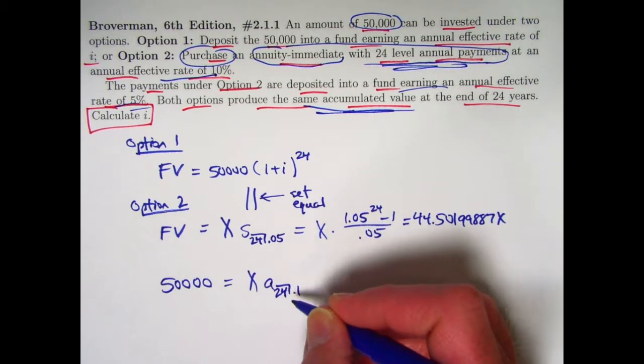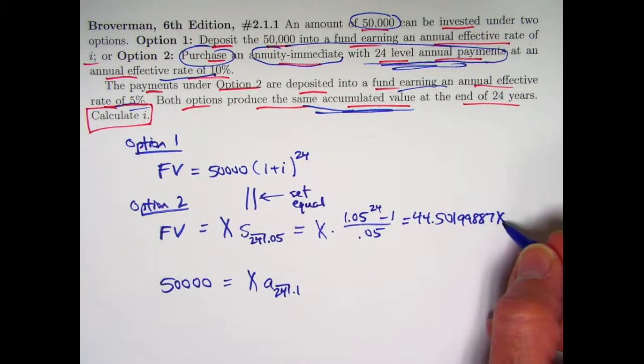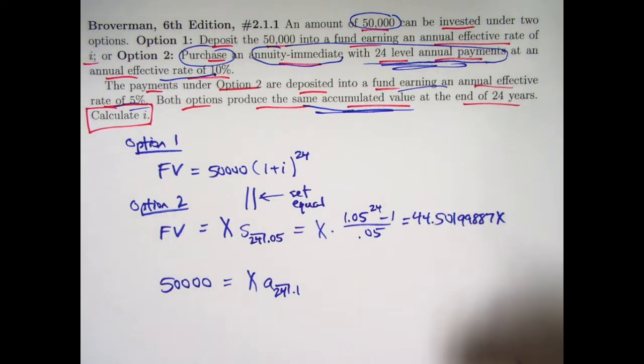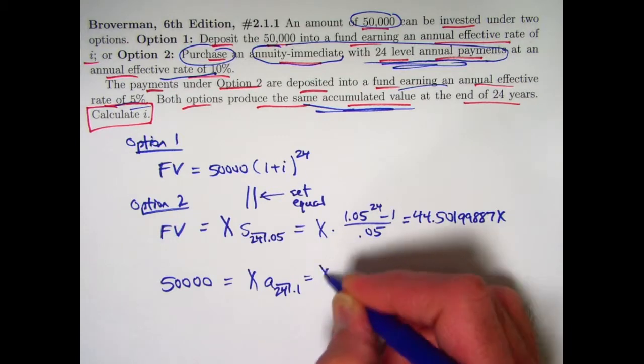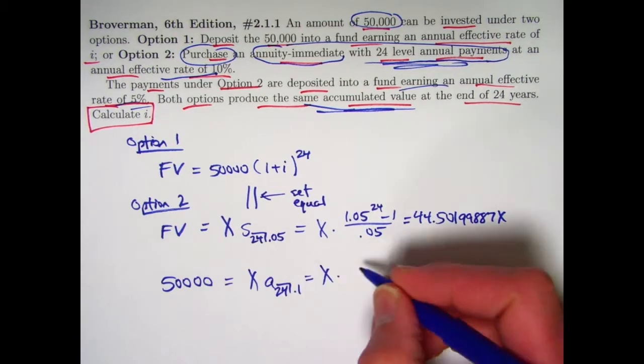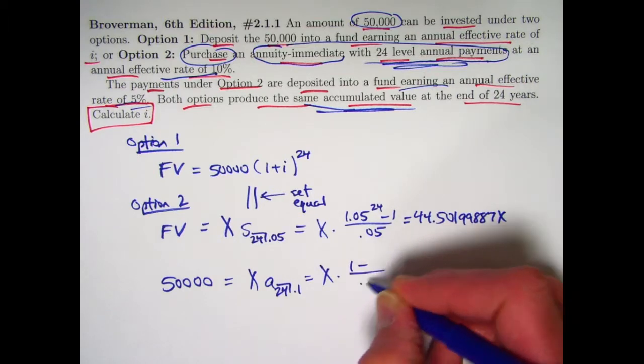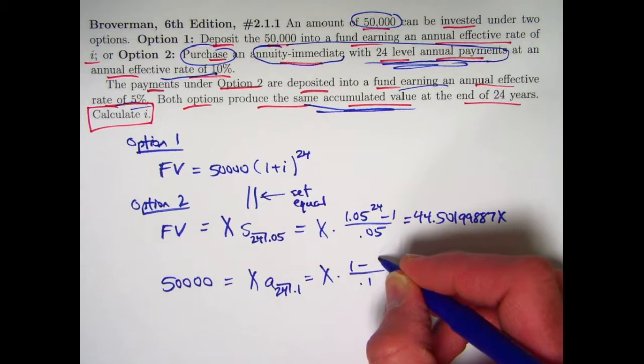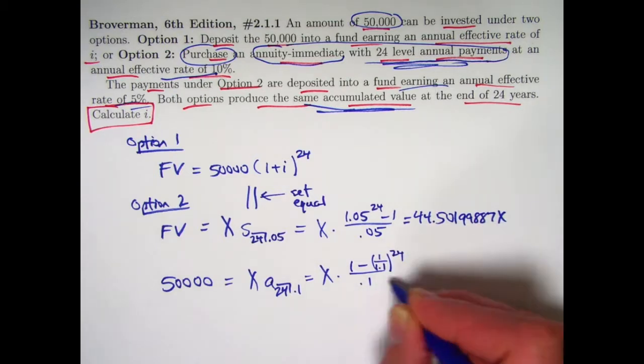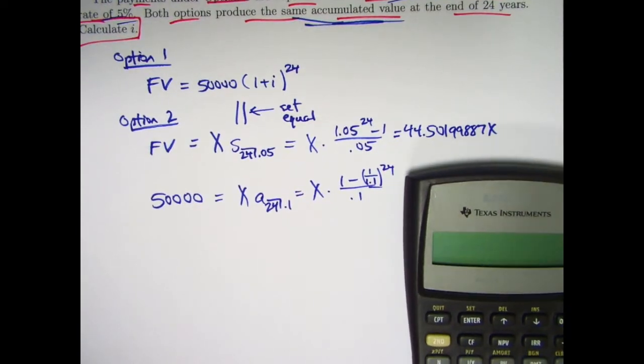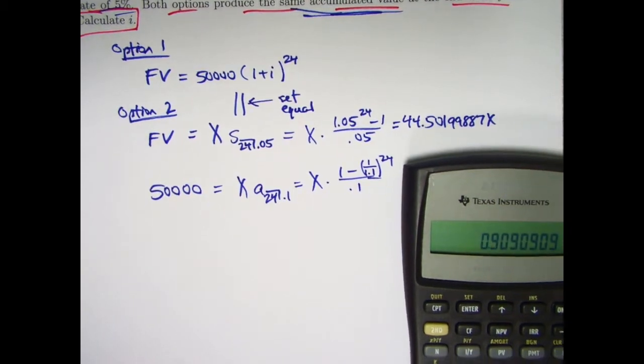$50,000 equals X times A24 with an interest rate of 10%. Put a 0.1 there. We can figure out what the A is here. We can solve for X, plug it back in here, set it equal to that, and solve for I. So, this is a good problem to practice. It'll test your problem-solving skills to combine all these things. The formula for the present value of the annuity immediate would be 1 minus V to the 24th over I. V is going to be 1 over 1 plus I, 1 over 1.1 in this case.